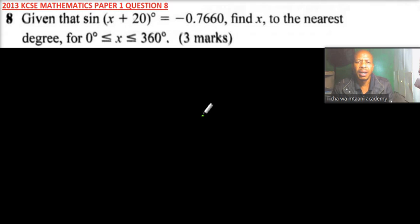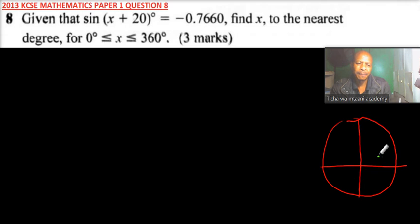Now, you get three marks. So if we are given that sine x plus 20 is equals to minus 0.766, if we use a unit circle, let's take a sample here, we divide into four parts.